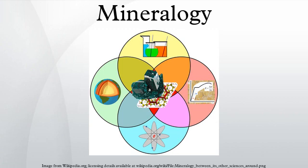René-Just Haüy, the father of modern crystallography, showed that crystals are periodic and established that the orientations of crystal faces can be expressed in terms of rational numbers, as later encoded in the Miller indices. In 1814, Jöns Jacob Berzelius introduced a classification of minerals based on their chemistry rather than their crystal structure.